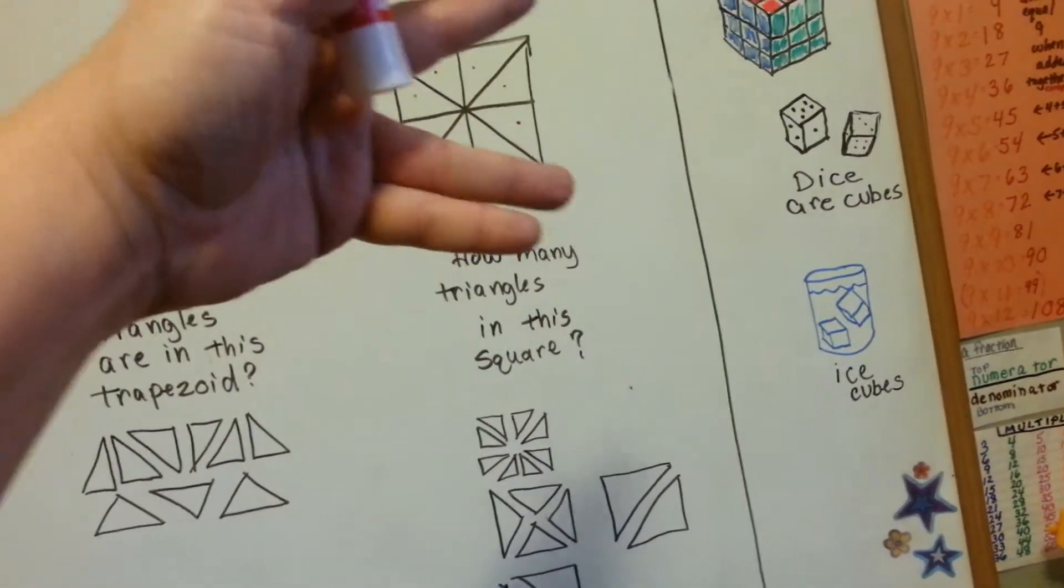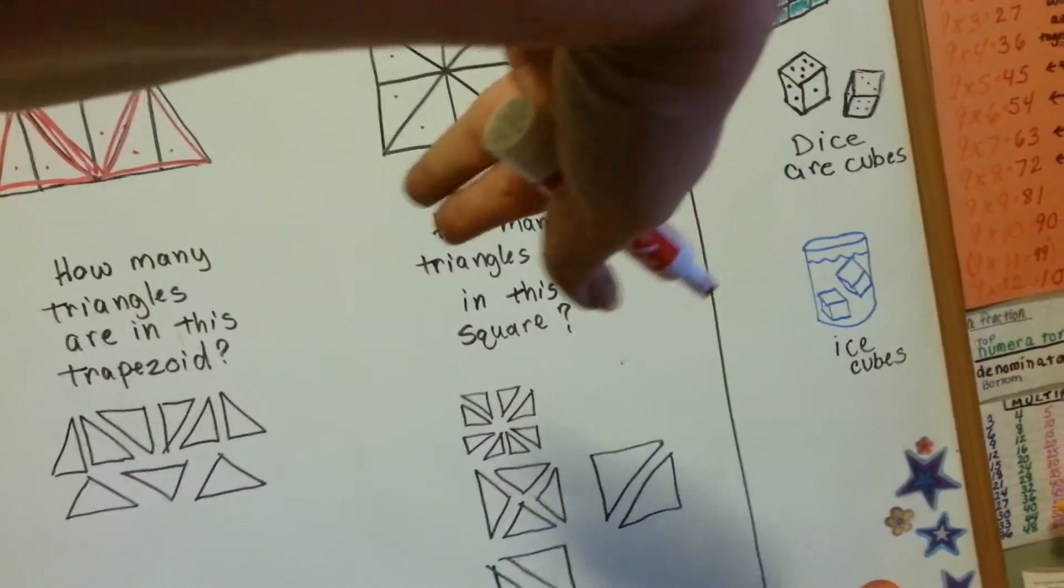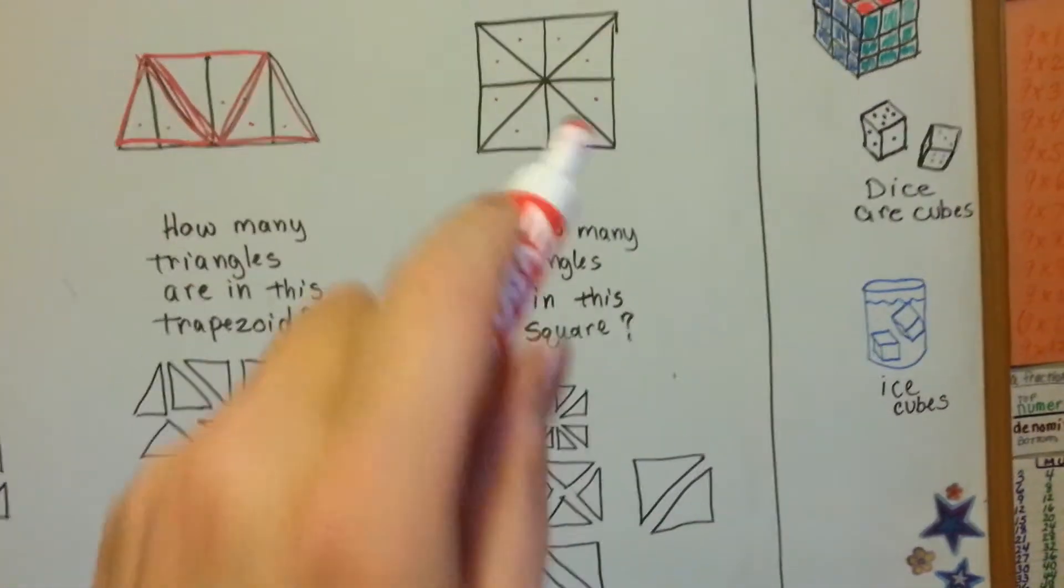There's one. There's two. There's three. And there's the fourth one. See? See how they're hidden in there?